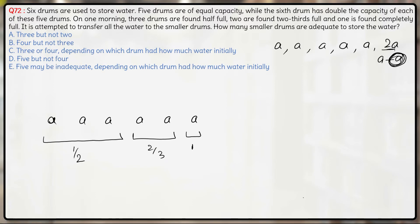In each of these 3 cases, at least these 3 drums of total capacity 3A will be half full, these 2 drums of total capacity 2A will be 2/3 full, and 1 drum of capacity A will be completely full. So the minimum capacity that is full is: half of 3A = 3A/2, plus 2/3 of 2A = 4A/3, plus A. Taking LCM of 6: that gives 9 + 8 + 6 = 23A/6.